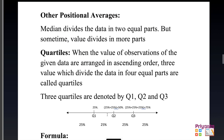Median divides the data into 2 equal parts at 50-50%. But sometimes the data needs to be divided into more parts — this is where quartiles come in. When observations are arranged in ascending order, the 3 values that divide the data into 4 equal parts are called quartiles. Each part represents 25%.